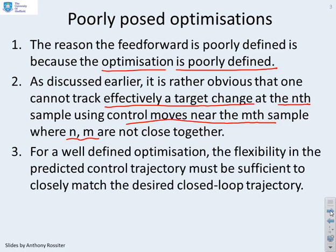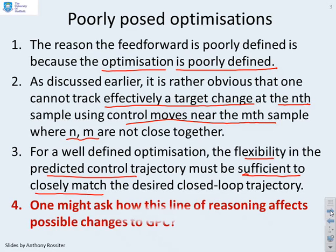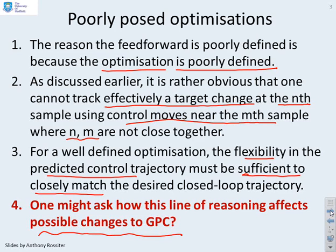For a well-defined optimisation, the flexibility in the predicted control trajectory must be sufficient to closely match the desired closed-loop trajectory. If that's not the case, you won't get a sensible answer. The previous video suggested we just reduce the amount of advanced knowledge available, and now we're going to see whether there are some alternatives.